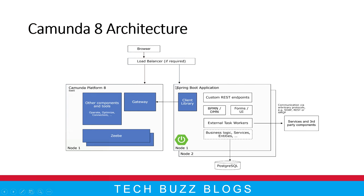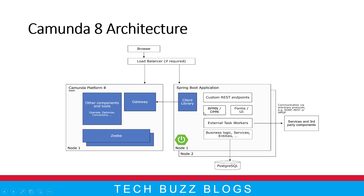In your Spring Boot application, it is quite simple. You have custom REST endpoints or REST controllers, BPMN and DMN files in your resource folder, form UIs or your own UIs, and external task workers for calling third-party services. You also have business logic and entities that interact with a database — Postgres, Oracle, MySQL, or whatever it may be. Notably, you can run your application as multiple nodes, which is managed by the ZB client in a cluster-wise fashion — a key advantage of Camunda 8 for performance.